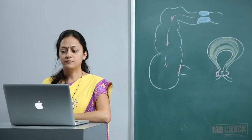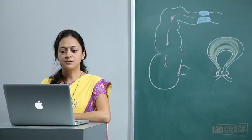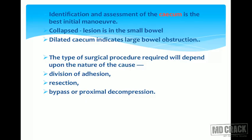Identification and assessment of the cecum is the best initial maneuver. If it is collapsed, the lesion is in the small bowel. If it is dilated, it indicates large bowel obstruction.